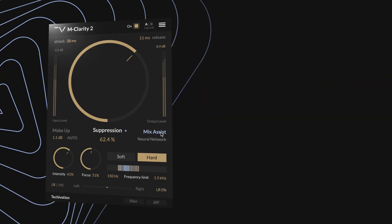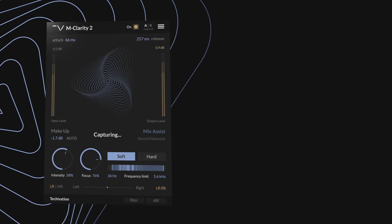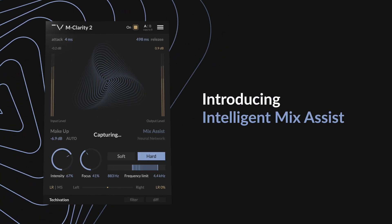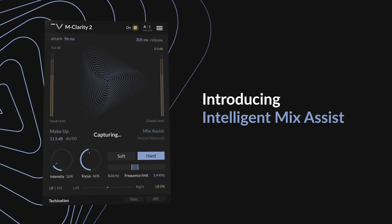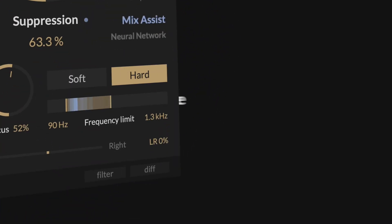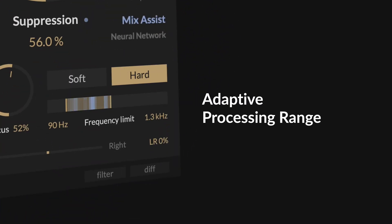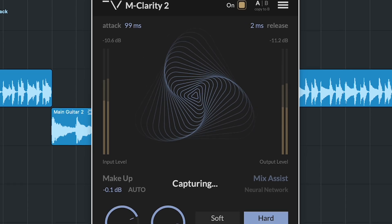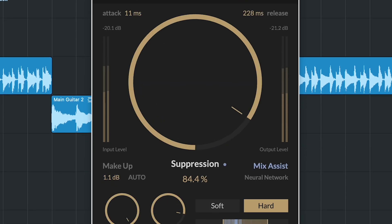This is alongside a new intelligent mix assistant which analyses your audio and suggests the right settings for your track, and an adapted processing range, meaning the plugin continuously analyses your audio and automatically adjusts the processing frequency range to target boxy, muddy and harsh frequencies for extra precision.